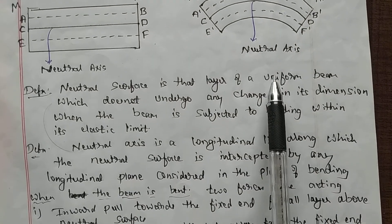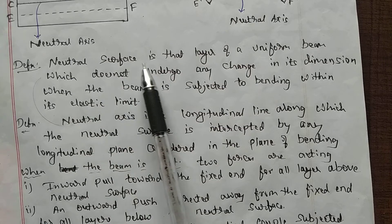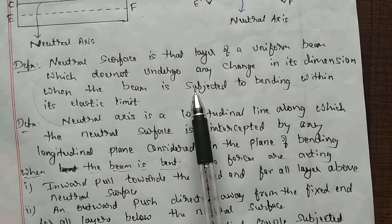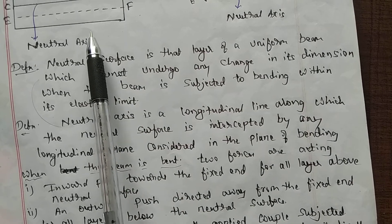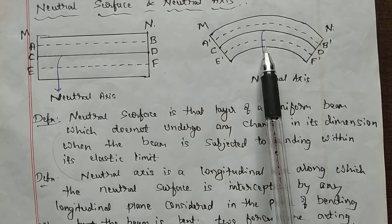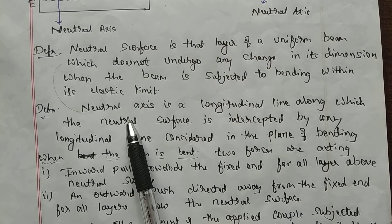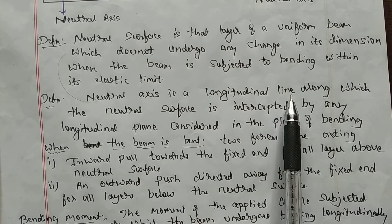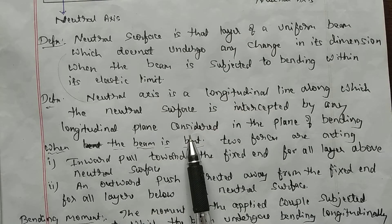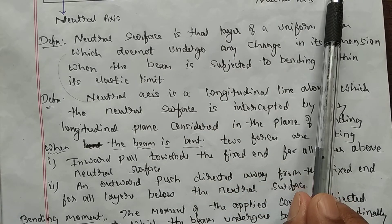The neutral surface is defined as that layer of a uniform beam which does not undergo any change in its dimension when the beam is subjected to bending within the elastic limit. CD does not change even when bent — therefore it is called the neutral surface. The neutral axis is a longitudinal line along which the neutral surface is intercepted by a longitudinal plane considered in the plane of bending.